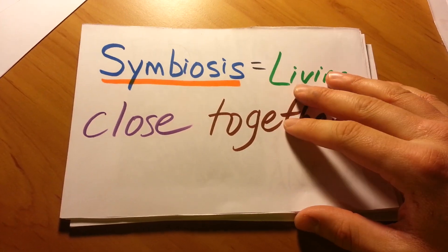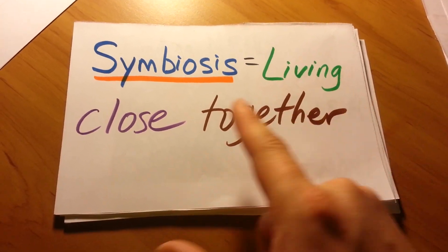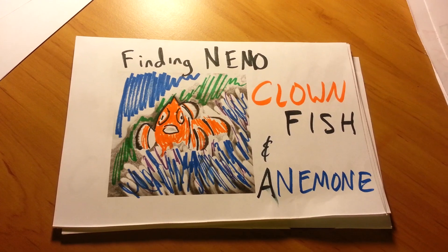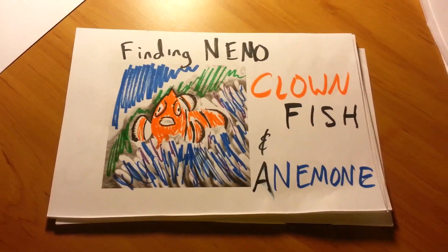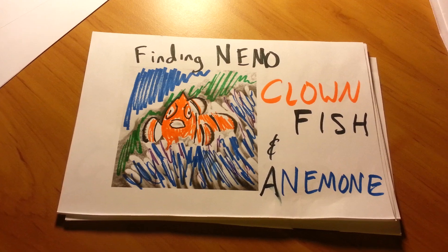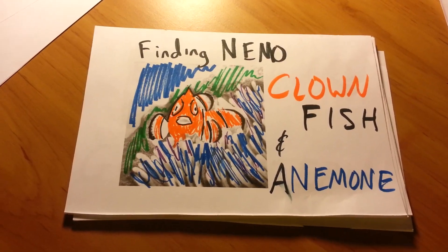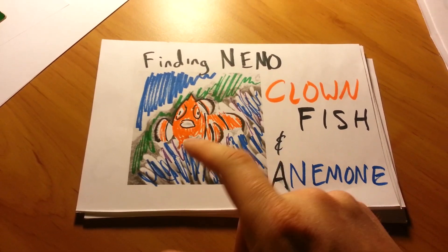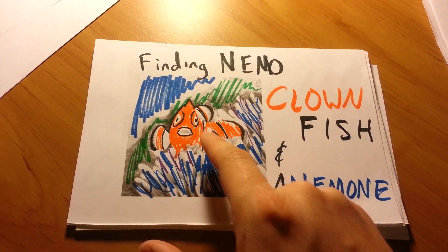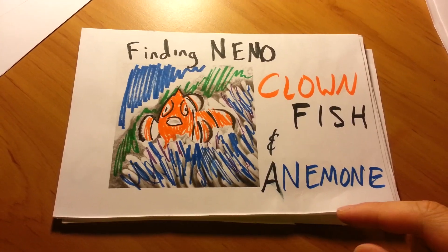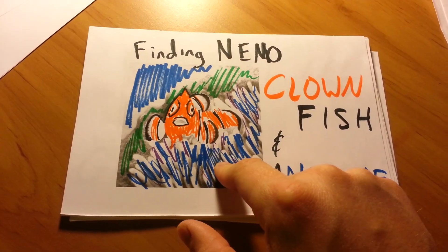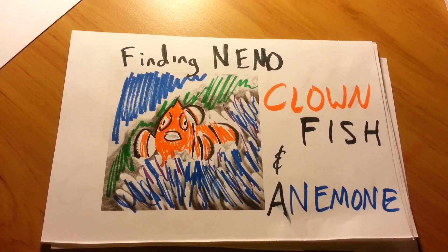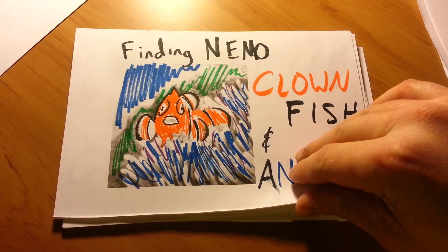The word symbiosis means that things live closely together. You may have seen an example of symbiosis in the movie Finding Nemo, where we had a clownfish that lived inside of a sea anemone. The clownfish would swim around and get cleaned off by the sea anemone, so the anemone would get a little bit of a meal and the clownfish would get a little bit of a bath. It was a healthy symbiotic relationship.